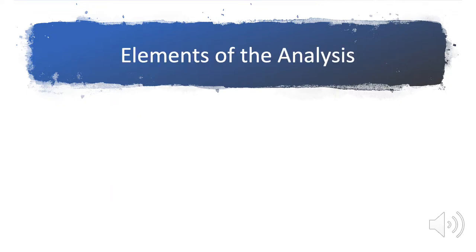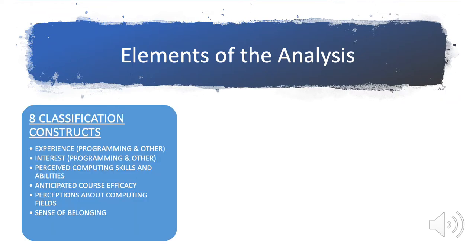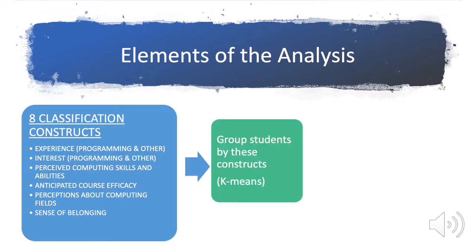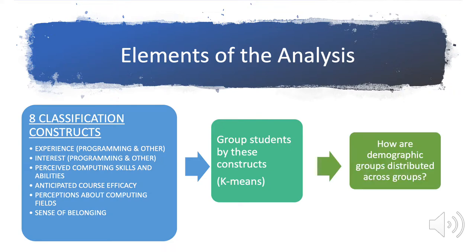Instead of starting with the question of how do men and women, for example, differ in terms of prior experience or interest in computing, we asked how do these students cluster together based on constructs related to persisting in computing, such as prior experience, interest, belonging, and perceptions of the field. We then used a k-means cluster analytic technique to create the groups from these constructs. If you're interested in the details of the analysis, you can read the paper — a link is provided at the end of this module. Then, once we had the groups determined only by these constructs, we looked at how the different demographic groups were distributed across the clusters.